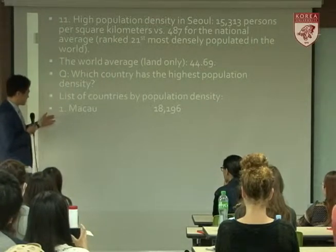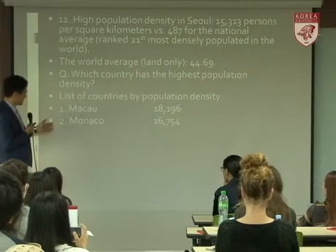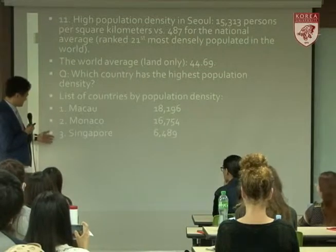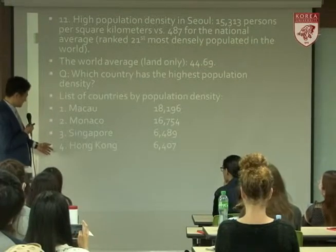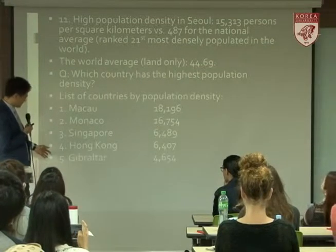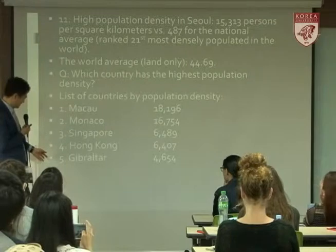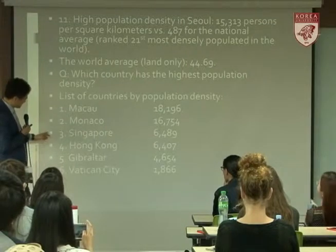The list of countries with the highest population density: number one is Macau, then Monaco, Singapore, and Hong Kong.